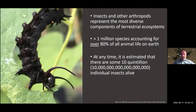I always love to start with a few general facts about insects, because unfortunately they're often vilified and considered something to be controlled, not conserved. But I would make the strong argument that we would be up a creek without a paddle without insects on this planet. Insects and other arthropods truly represent the most diverse components of terrestrial ecosystems. Currently there are over one million described species, accounting for well over 80% of all animal life on this planet. At any given time there's an estimated 10 quintillion individual insects alive on Earth.